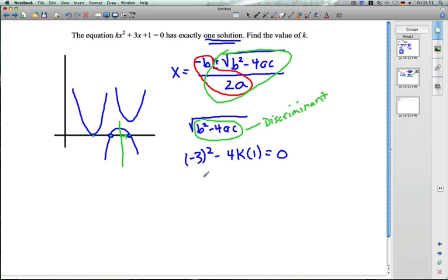So remember, negative three squared is positive nine minus 4k equals zero. So k equals negative nine divided by negative four. So we have nine over four. So that's the only k that will prompt, or that will give one solution for this function.